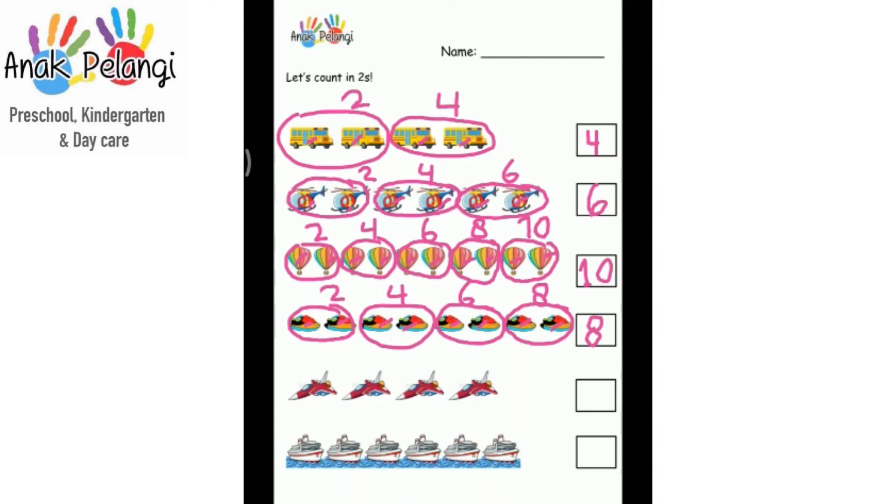Now let's count the jets. Circle them in twos. Count them in twos. One, two. Three, four. Two, four. How many jets are there? Four. Write four in the box.